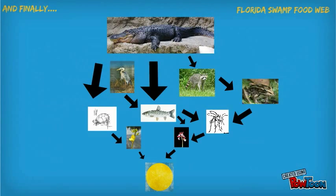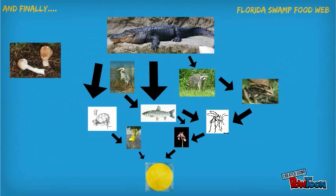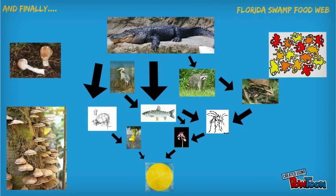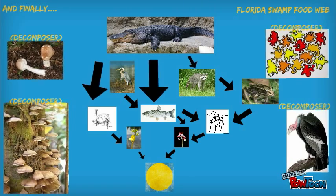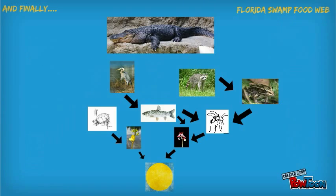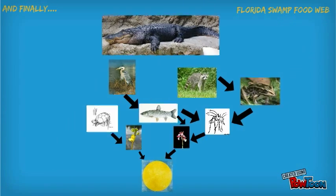Sadly, every organism has to die and that's where decomposers come in. They use the dead bodies as food and complete the food web process by decomposing the bodies back into the dirt. Thank you.